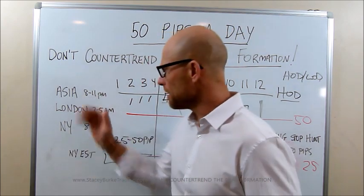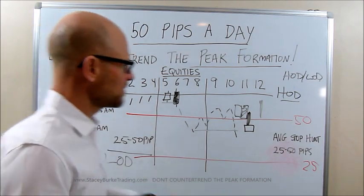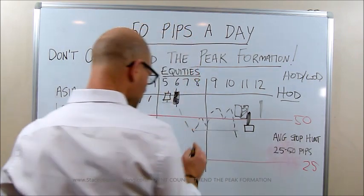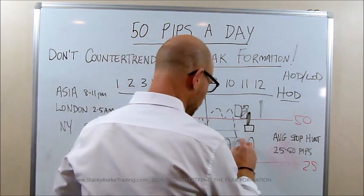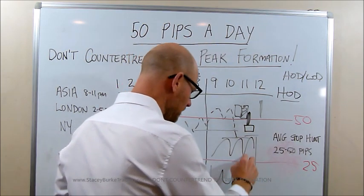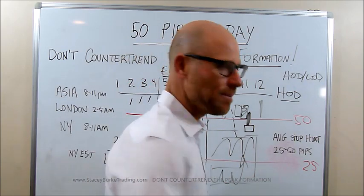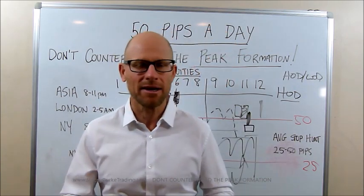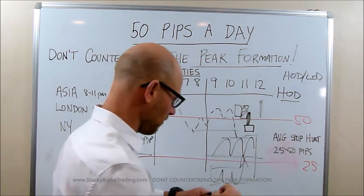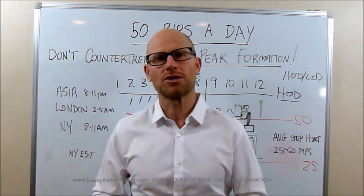Remember, each session as the day evolves is going to potentially lock one of those areas in. The odd time we might be getting three peaks where the market works the high, works the high, works the high and sells off — and vice versa for the low of the day — over the New York, Asia, London, New York sessions. But typically that will be inside of the high or low of the week, or at the very top or bottom of the high or low of the week.